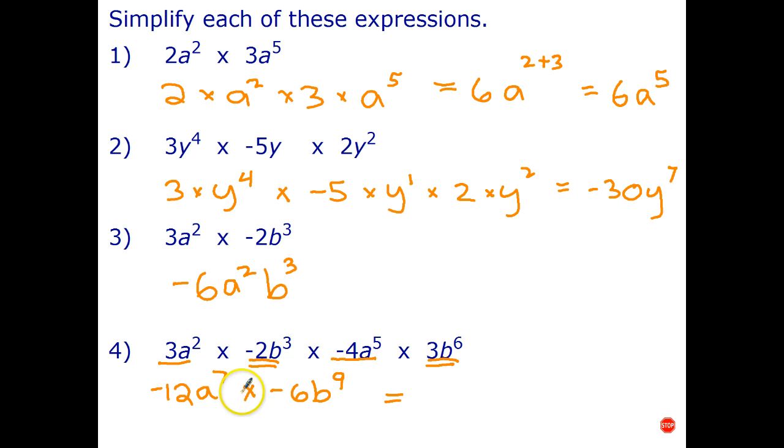So we can simplify this by saying negative twelve times negative six. Well negative times negative is positive. Twelve times six is seventy-two. a to the seventh b to the ninth.